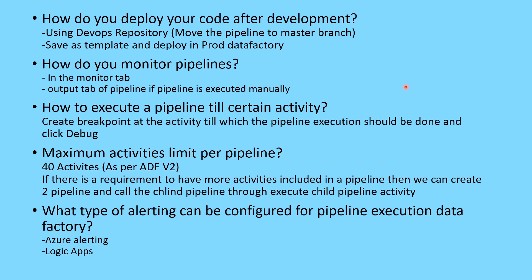What type of alerting can be configured for pipeline execution in Data Factory? We can use either Azure Alerting or Logic Apps. Azure Alerts can be linked to triggers — for example, a trigger running at 2 AM can be configured with an Azure Alert tied to an email distribution group, so the group is notified of the trigger's success or failure. When you want more detailed alerting with pipeline information, error details, files processed, and a clear email summary, you should use Logic Apps.